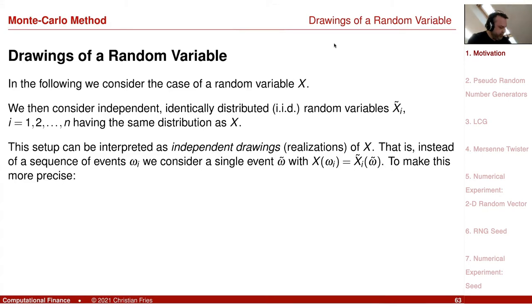Xi is a sequence of iid random variables, written without the omega. Xi — later I dropped the tilde — is a sequence of iid random variables.